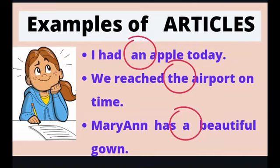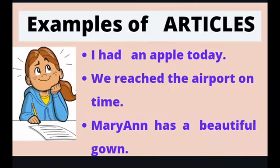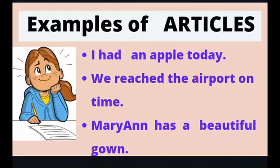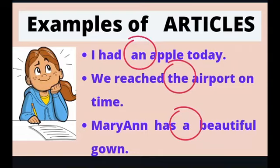Marianne has a beautiful gown. 'A' is an article and it is used before the adjective 'beautiful'. So, students, articles can be used before adjectives also in certain cases.